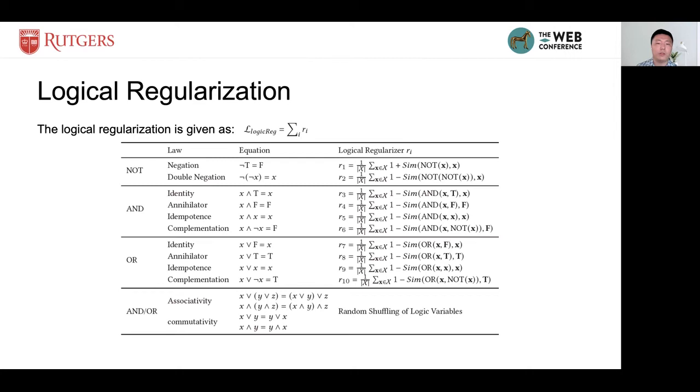So the associative and the commutative laws cannot be easily represented as regularizers. Instead, we randomly shuffle the order of the input event every iteration during the training process to make the learned AND and OR modules satisfy these two laws.